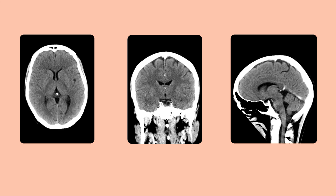The images on the screen are examples of how a CT data set can be reconstructed or reformatted to be projected from different imaging planes. The first image is the traditional axial view, the second image is the coronal view, and the last image is the sagittal view.